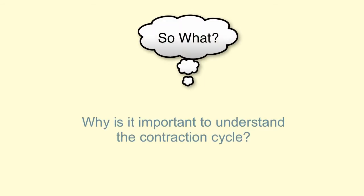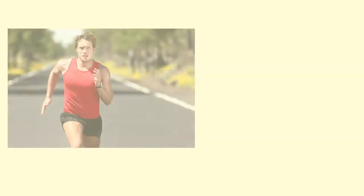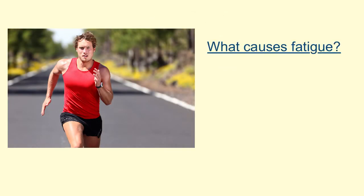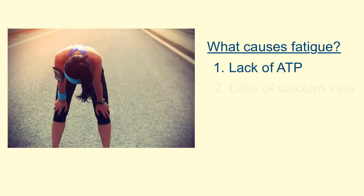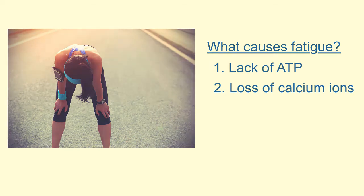Why is it important to understand the contraction cycle? Well, this can help us understand exercise physiology. When we exercise, why can't our muscles contract indefinitely? One reason is that if a muscle cannot supply enough ATP to meet demand, the muscle will fatigue. For example, you cannot sprint forever because your mitochondria can't continue producing ATP rapidly enough. Dehydration can also cause muscle fatigue because the associated loss of calcium ions interferes with the contraction cycle.